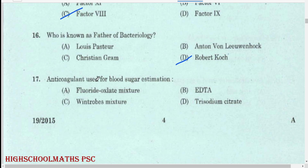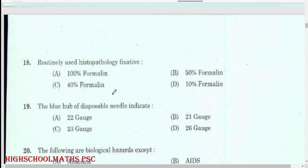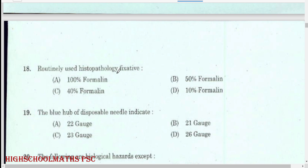Anticoagulant used for blood sugar estimation: fluoride oxalate mixture. Routinely used histopathology fixative: 10% formalin.